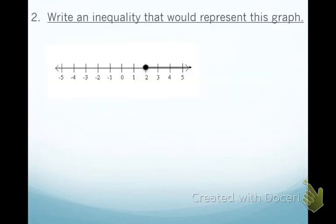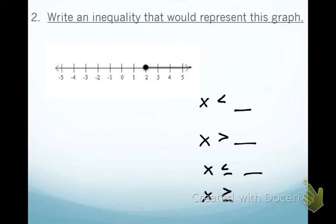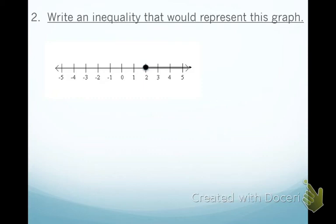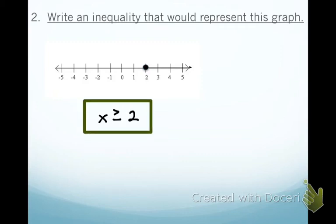For number 2, it asks us to write an inequality to represent a graph. Writing an inequality means having x, some kind of number, and whether it's less than, greater than, less than or equal to, or greater than or equal to something. The number in the middle is 2. The circle is closed, so we know it has to include equal to. The highlighted numbers are greater than 2. So: x is greater than or equal to 2, meaning all solutions are greater than or equal to 2.